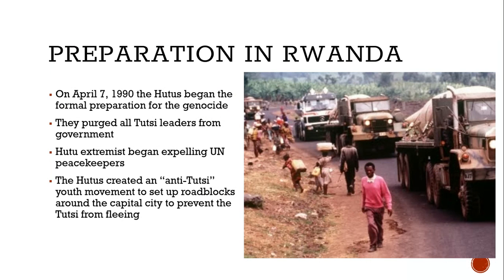In Rwanda, on April 7th, 1994, Hutus began the formal preparation for the genocide. Tutsi leaders were purged from the government. Hutu extremists began expelling UN peacekeepers. Hutus then created an anti-Tutsi youth movement to set up roadblocks around the capital city to prevent Tutsis from fleeing.